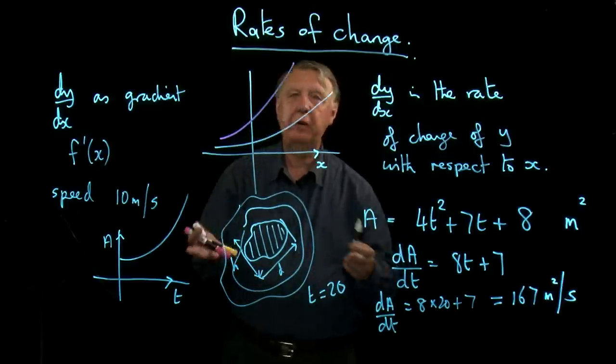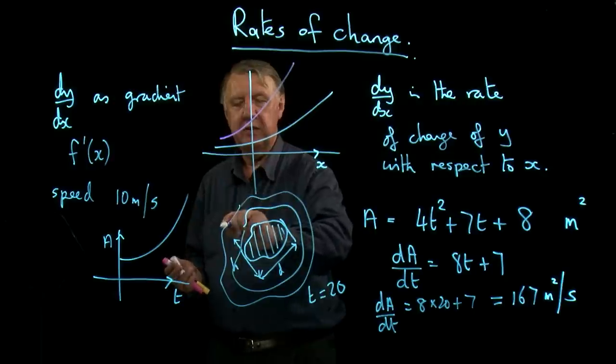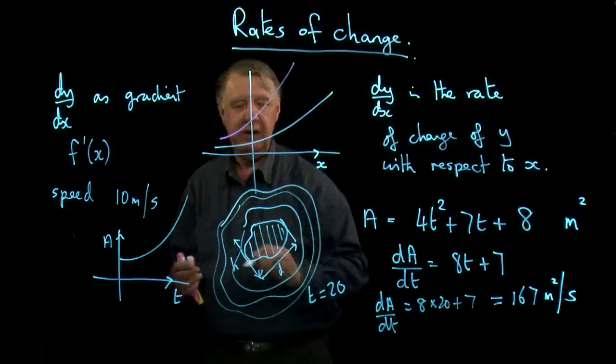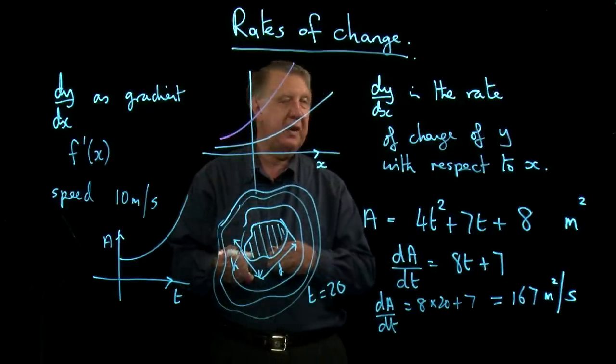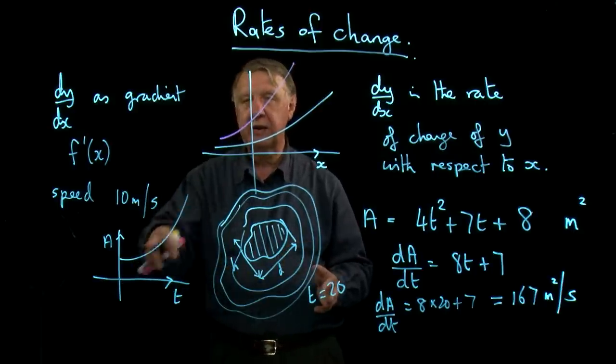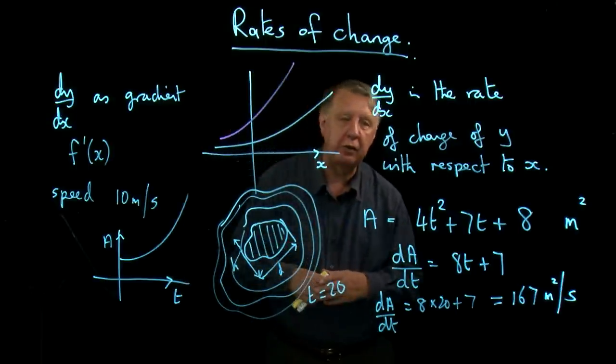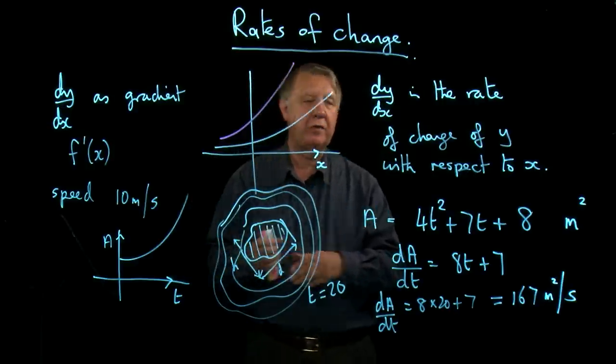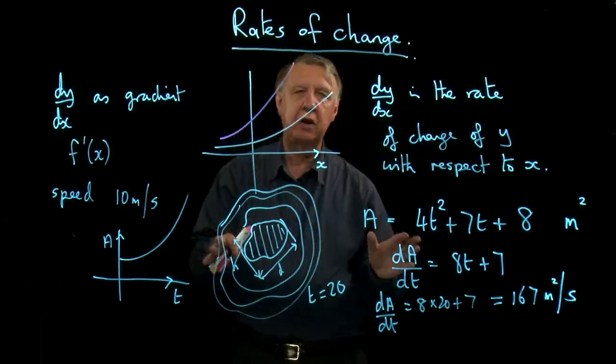So this tells me something incredibly useful. It tells me that after 20 seconds, the rate at which the area of this spillage is increasing is 167 square metres every second. And of course that will change because this isn't a straight line. And so the beauty of differentiation is that it enables us to get some idea of what happens in changing situations. And you will meet many more examples like this.